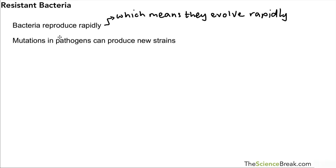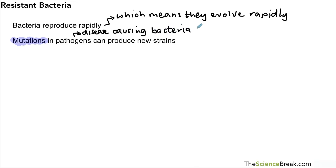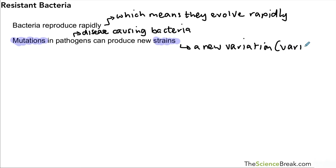In the second stage, mutations in pathogens — in the DNA of pathogens — can produce new strains. Remember, by pathogens we mean microbes or bacteria that can cause disease. A new strain is when we have a new version or new variation of the bacteria compared to what we had before. We call it a variant — a new variant.